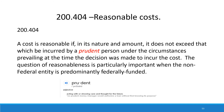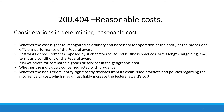We ask that you take a moment and consider whether you are being a prudent person in expending any grant funding. Items to consider in determining whether an item is reasonable include: Is the cost considered ordinary and necessary for operation of the entity or the proper and efficient performance of the federal award? Are there any restraints or requirements imposed for this purchase such as sound business practices, arms-length bargaining, and terms and conditions of your federal award? Are the market prices comparable for goods or services within your geographical area? Is the person purchasing acting with prudence? And is the purchase within your established practice and policy guidelines?